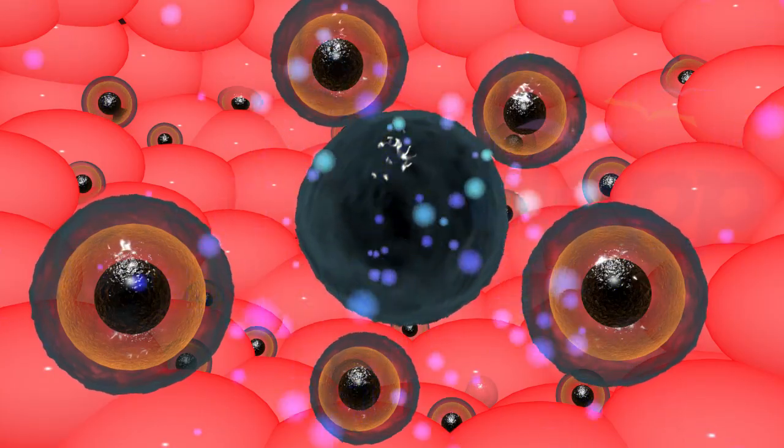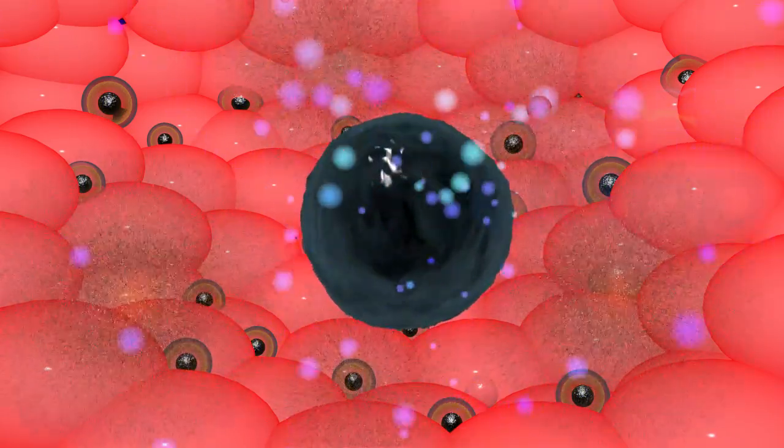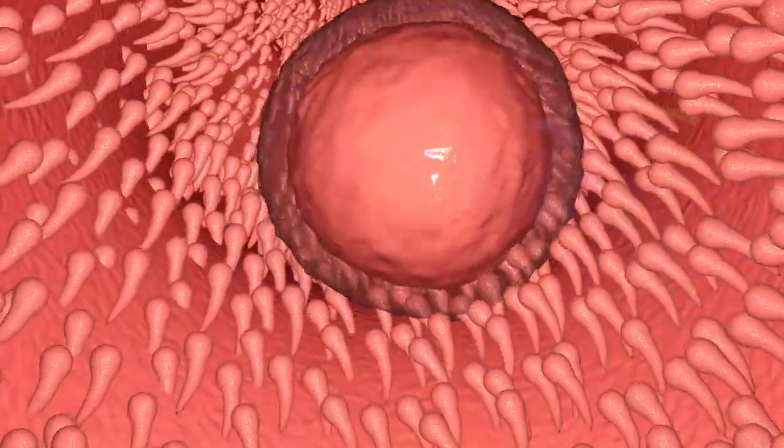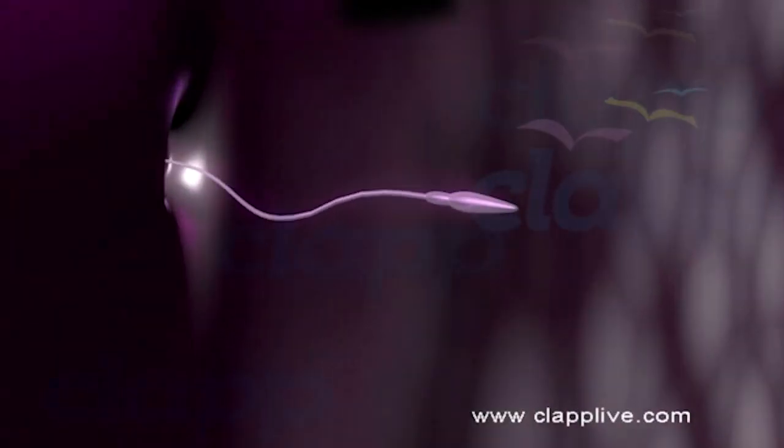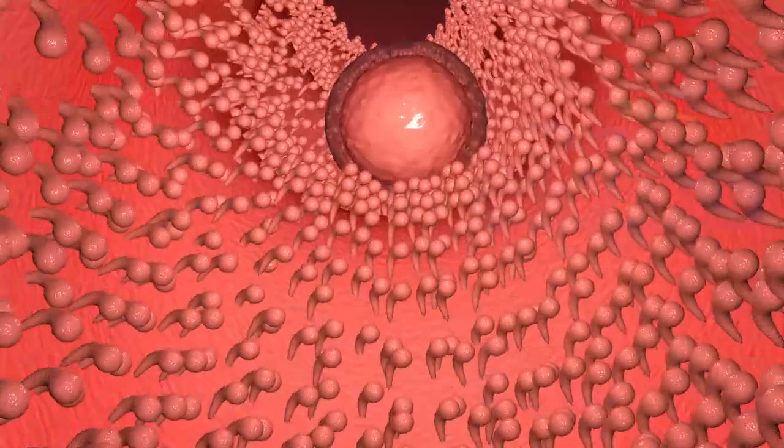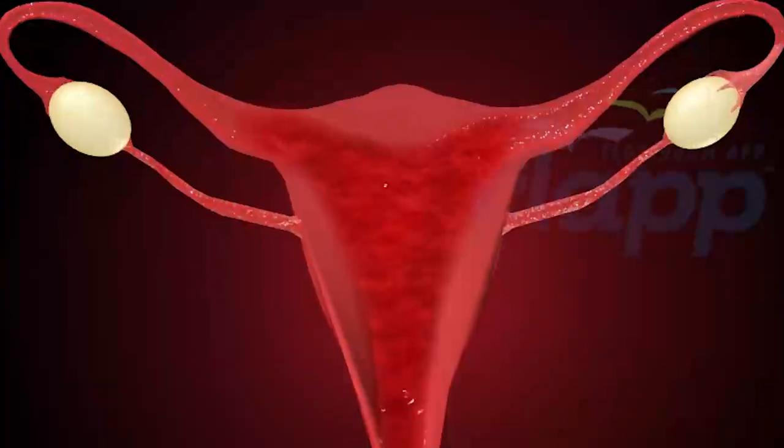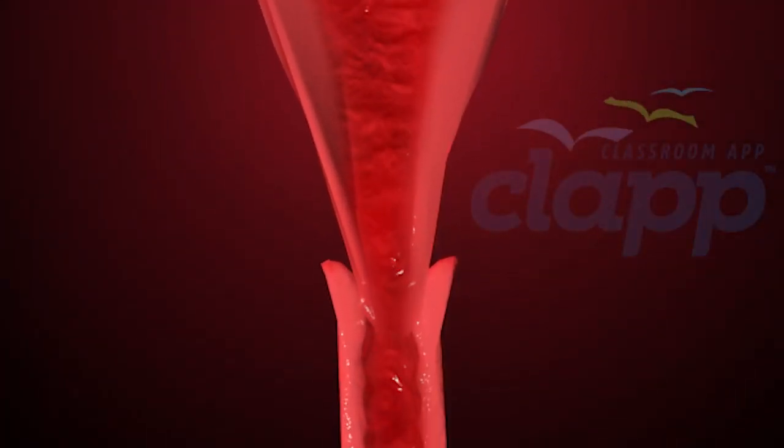Other follicles disintegrate in the next few days. This egg then travels to the uterus. If fertilized, it stays in the uterus. But if not fertilized, it will disintegrate after about 24 hours and the woman will have a regular menstrual period.